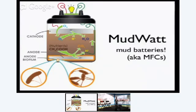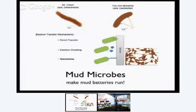The mud watt capitalizes on the byproducts of microbes in mud — the conductive byproducts of microbes in mud. Shewanella and Geobacter are two of the most common microbes you'll find in your backyard kind of mud. There are three ways in which electrons are transferred via these microbes from the cathode to the anode. It works like a battery except the mud is the conductive material between the plus and the minus.